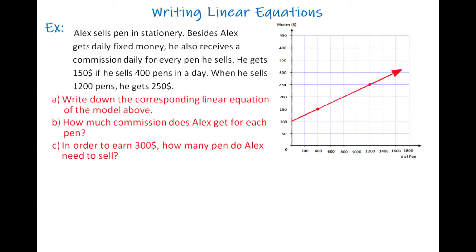This is our last question — a real-life application. Alex sells pens in a stationery. Besides a daily fixed amount, he also receives a commission for every pen he sells. He gets $150 if he sells 400 pens in a day, and $250 when he sells 1200 pens. Write down the corresponding linear equation of the model. In order to write the equation, we need two points. On the x-axis we have number of pens, and on the y-axis we have money. We can write a relation between money M and number of pens P.